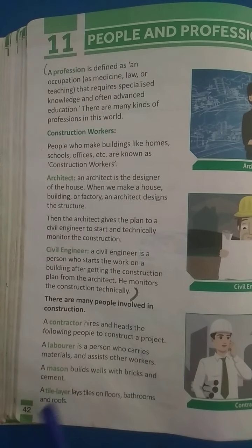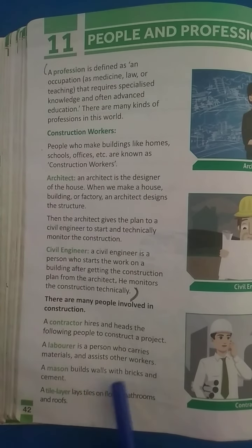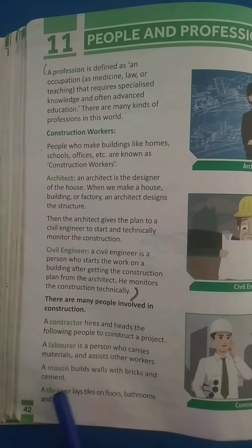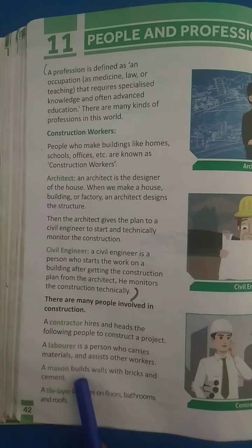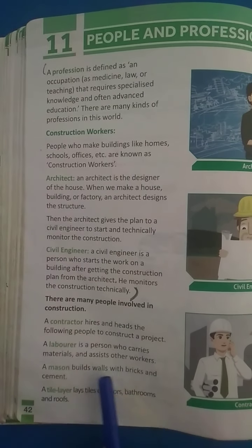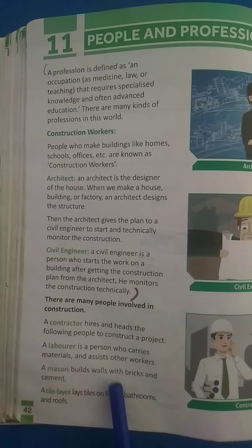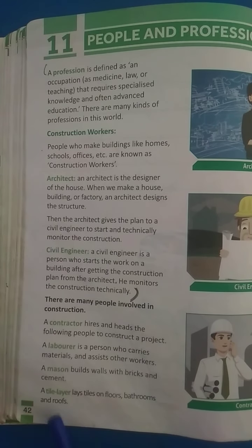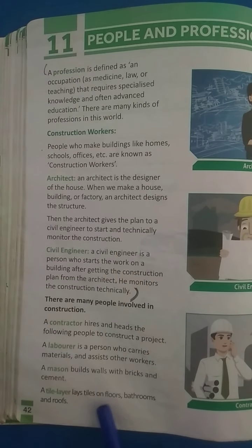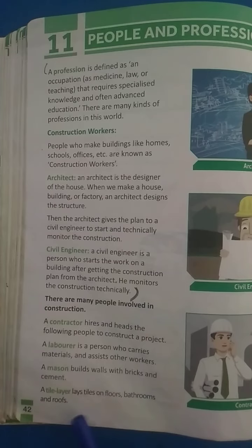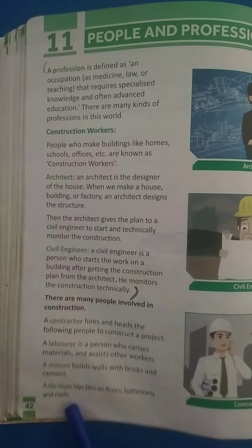The third one is a mason. A mason builds walls with bricks and cement. A tile layer lays tiles on floors, bathrooms, and roofs.